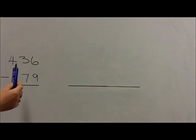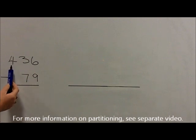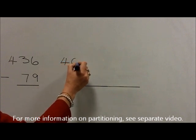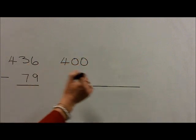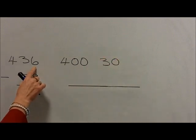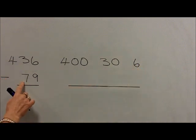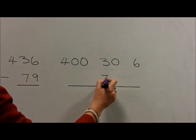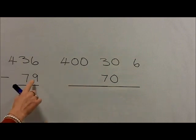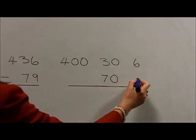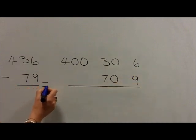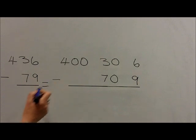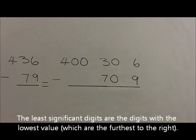With the question 436 take away 79, we first partition the 436 into the 4 hundreds which are 400, the 3 tens which are 30, and the 6 units which are 6. Then the 79 is partitioned into the 7 tens which are 70, written below the 3 tens which are 30, and then the 9 units are written below the 6 units. These 2 are both equal, so we add our equal sign and we are still doing a subtraction. We then start with the least significant digits, starting with 6 take away 9.